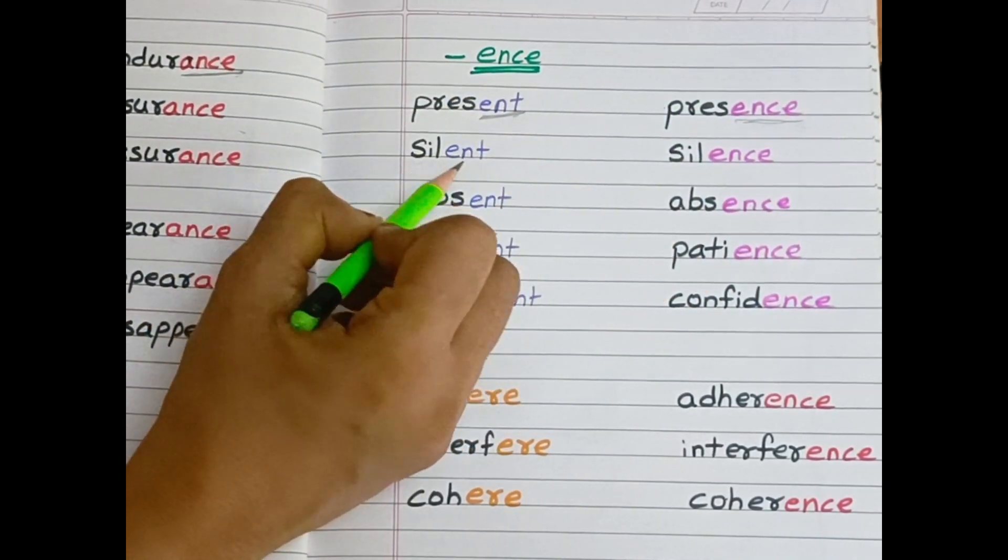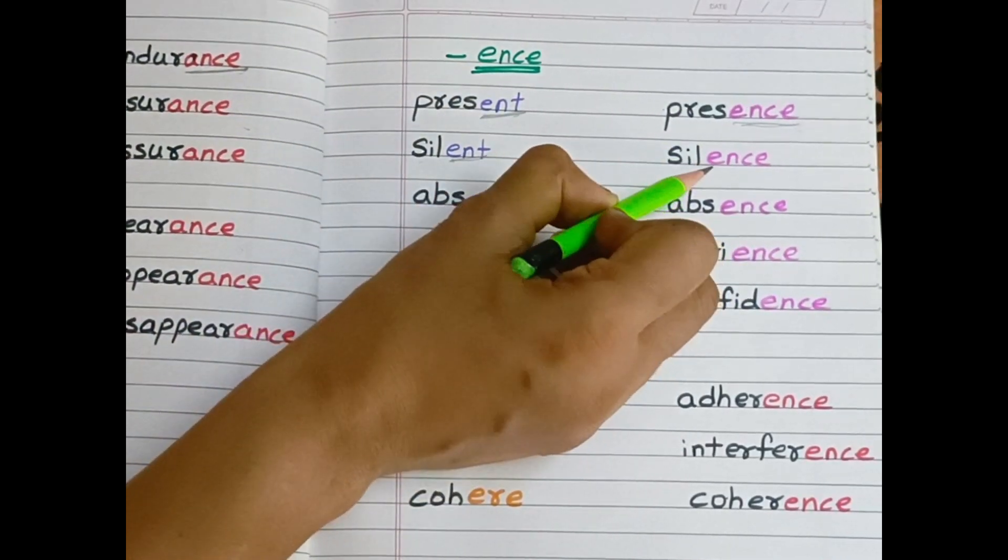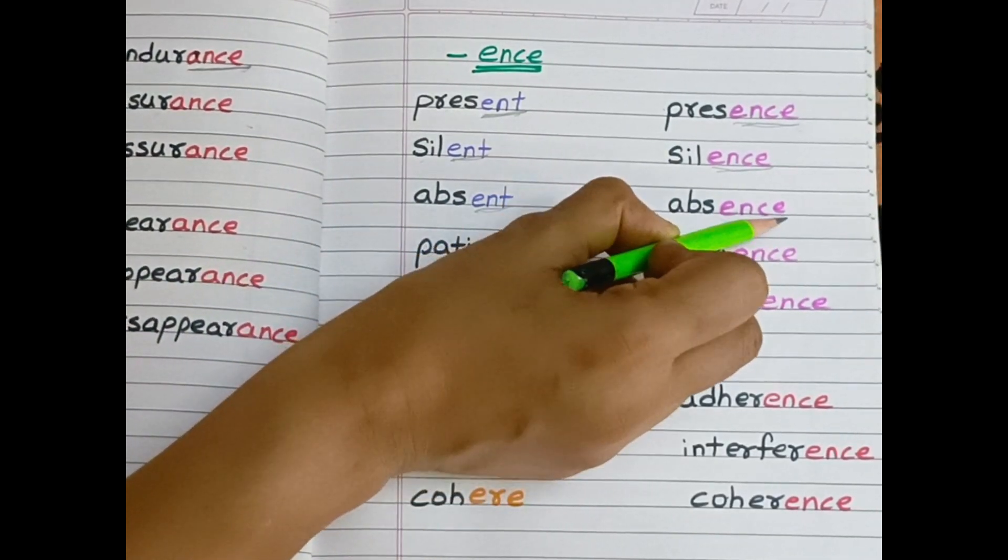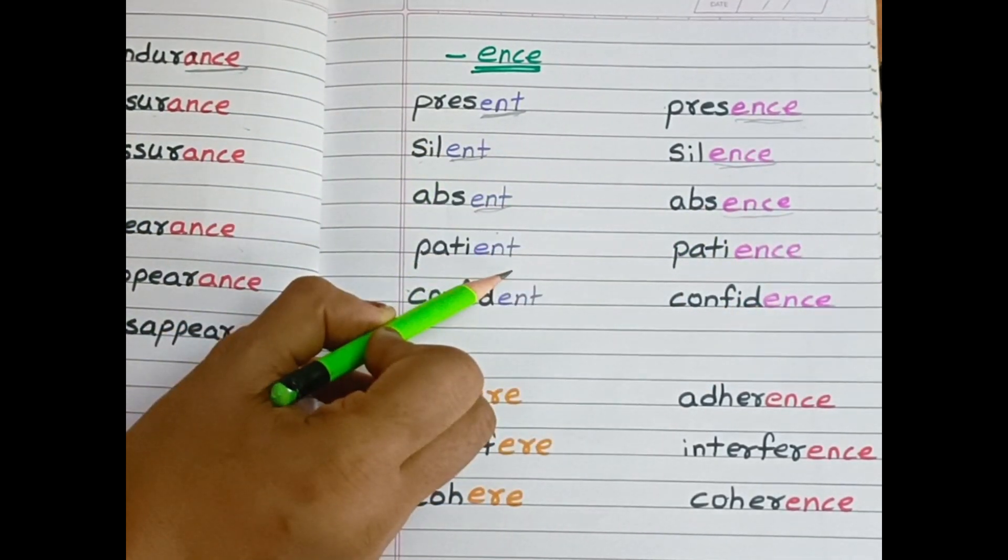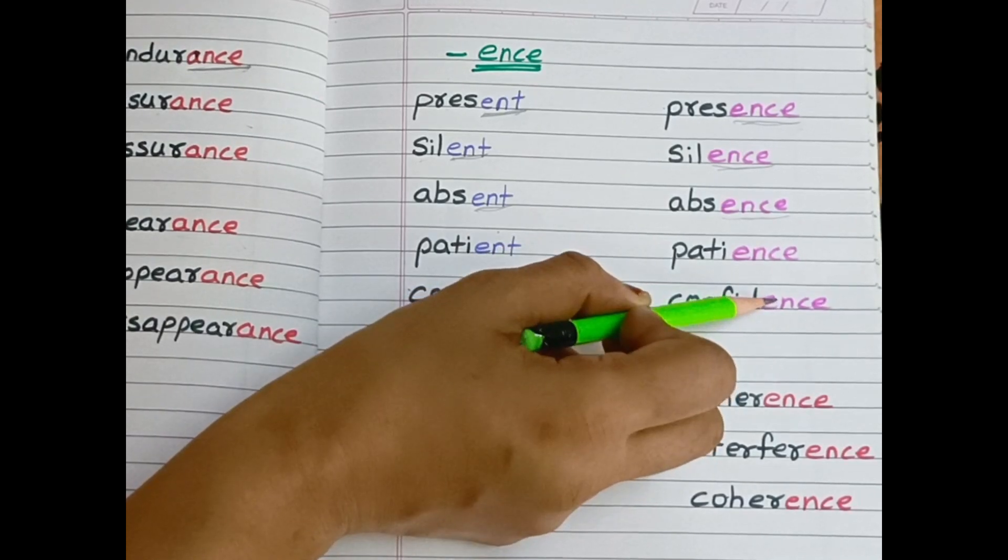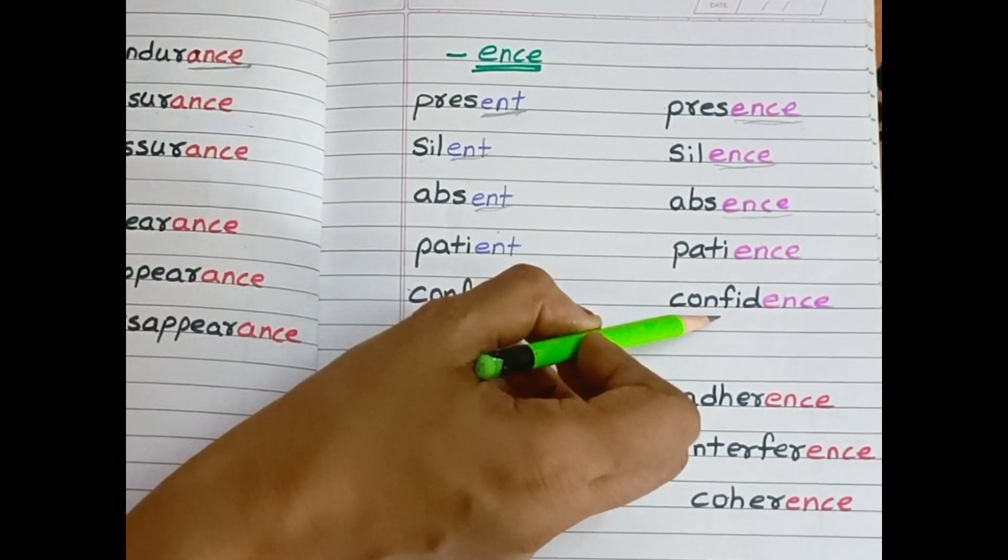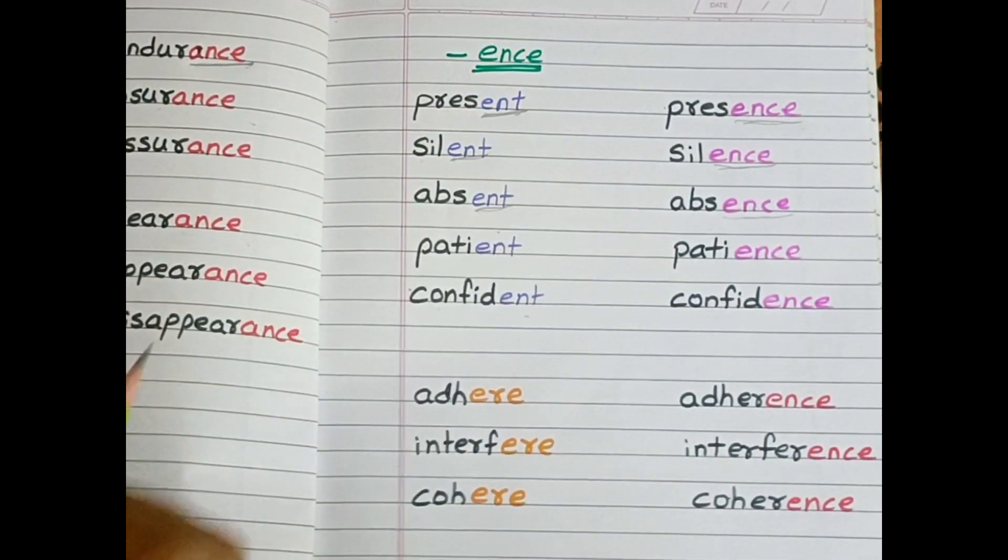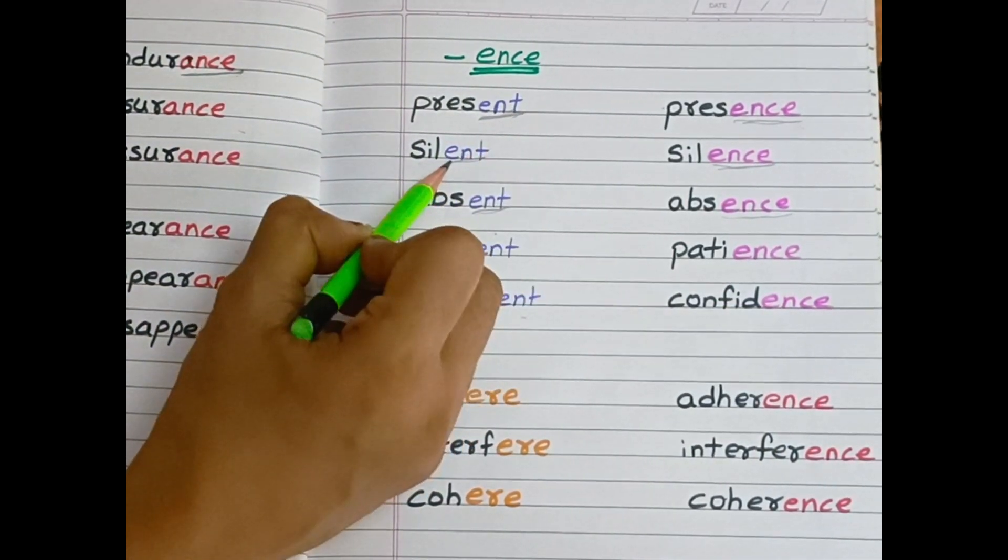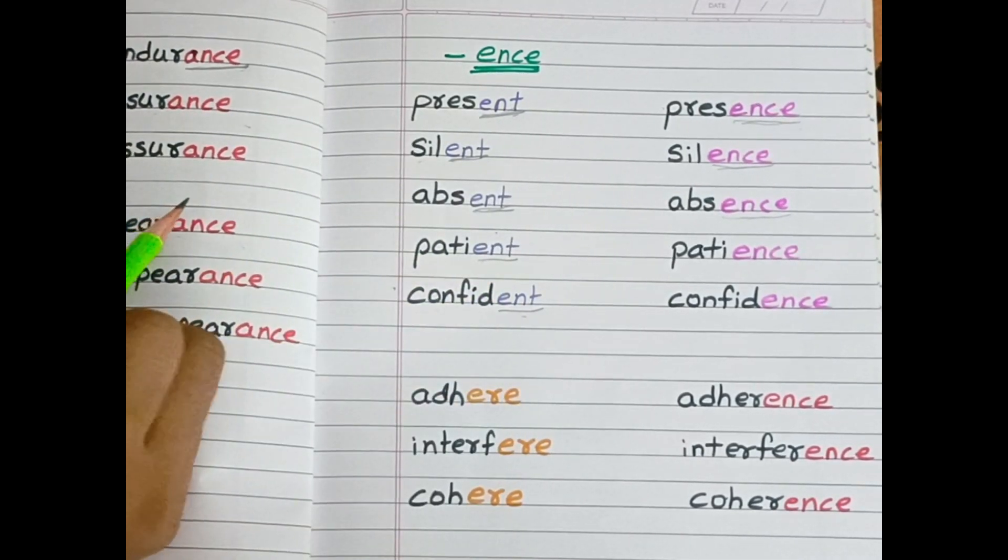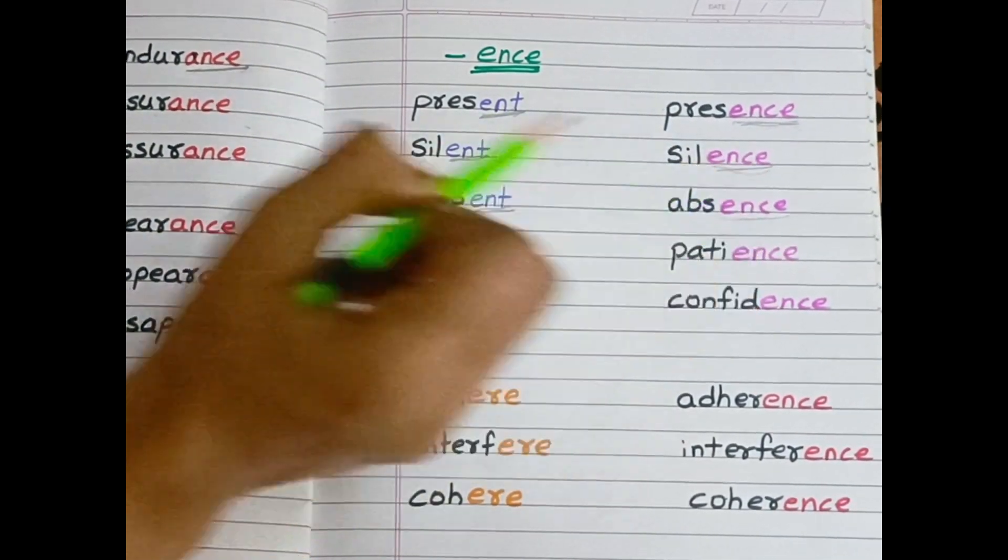Silent—silence. Absent—absence. Patient—patience. Confident—confidence. So here the words are ending with e-n-t, and here we are adding e-n-c-e.